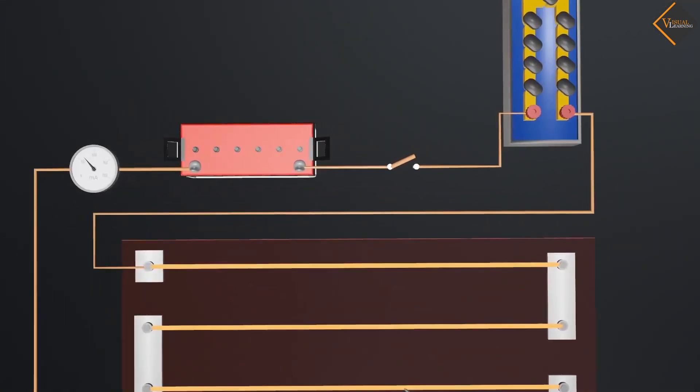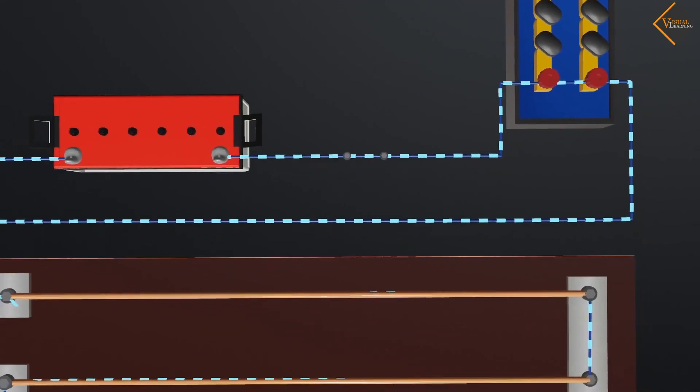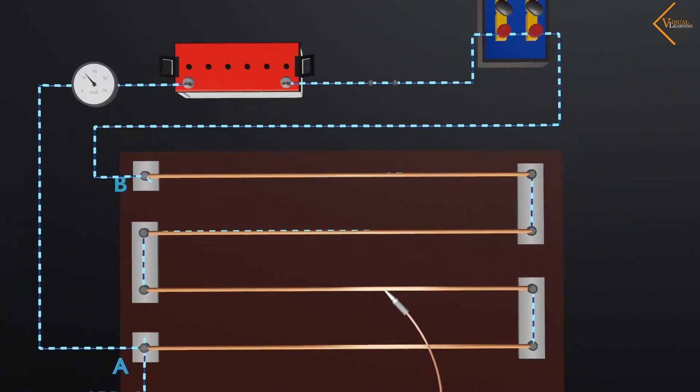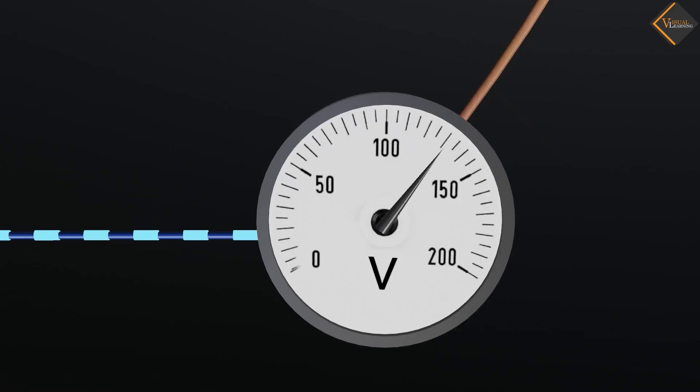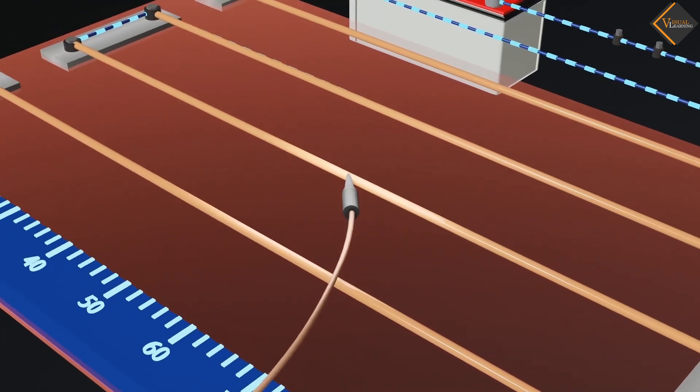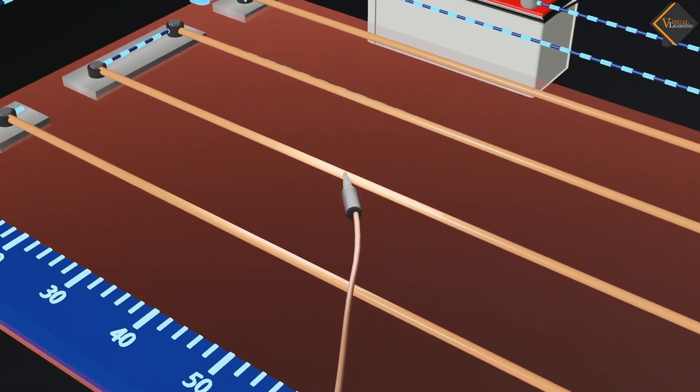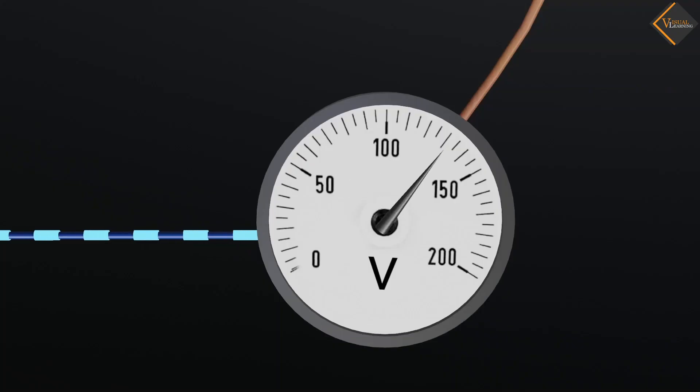As soon as we turn on the switch, current flows in the circuit and we see deflection in the ammeter and voltmeter. Now, we'll slowly slide the jockey along the wire and note the deflection of the voltmeter.